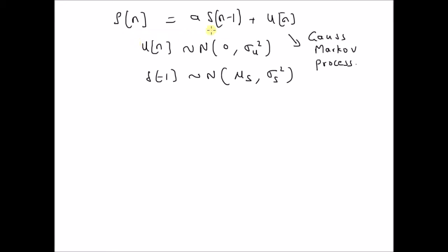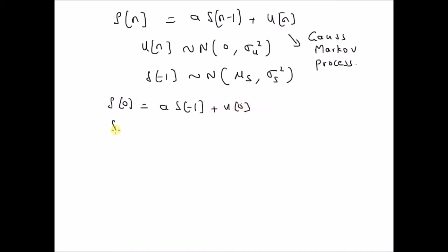For that, we need to derive a closed form expression for S of n — that is, we need an expression for S of n which is a function of S of minus 1 and U of n. So S of 0 is obviously given by A times the initial state S of minus 1 plus U of 0.